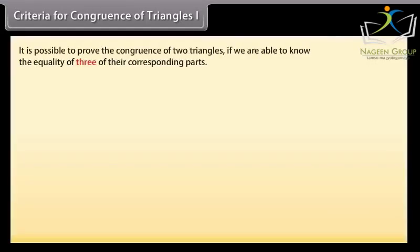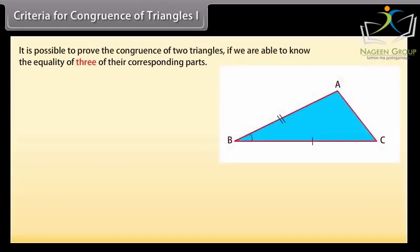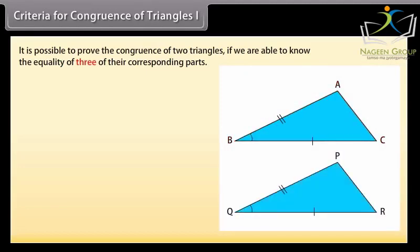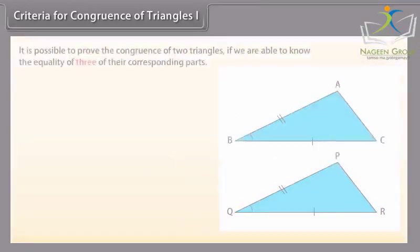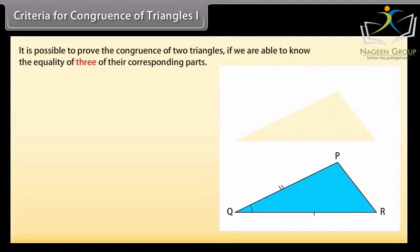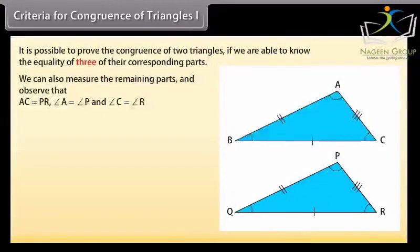Criteria for congruence of triangles 1. It is possible to prove the congruence of two triangles if we are able to know the equality of three of their corresponding parts. Consider a triangle ABC. Construct another triangle PQR such that QR is equal to BC, angle Q is equal to angle B, and PQ is equal to AB. If we trace or cut out triangle ABC and place it over triangle PQR, we will observe that one covers the other exactly. Thus, we may say they are congruent.